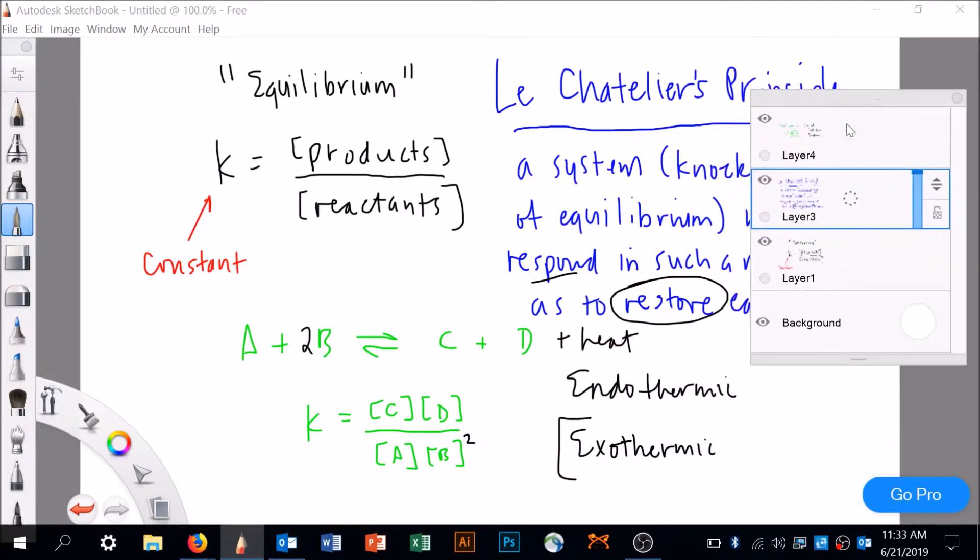If we add extra A to this system, that means the denominator is going to get bigger. If A gets bigger, in order to keep K constant, B is going to have to get smaller and C and D are going to have to get bigger. Can you see that if B gets consumed, it's going to drive the reaction that way?